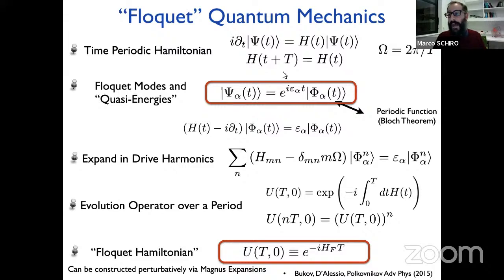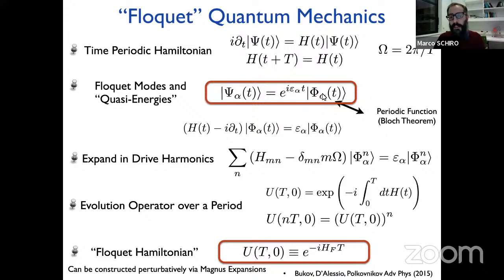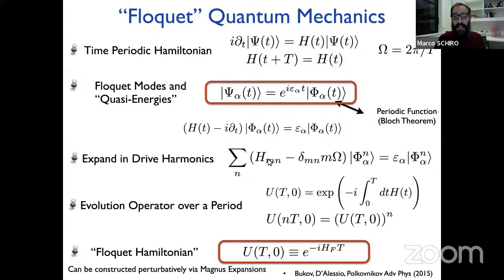The advantage of the Floquet theorem is that you can cast this quantum mechanics into an eigenvalue problem in a space that includes the quantum degrees of freedom and the harmonics of the drive — like classical photons of the drive. Another useful perspective is to look at the evolution operator U(T, 0) over one period. If you observe the system stroboscopically — after n cycles — the evolution operator just applies n times the same basic evolution, suggesting that some effective Hamiltonian is hidden behind this Floquet problem.